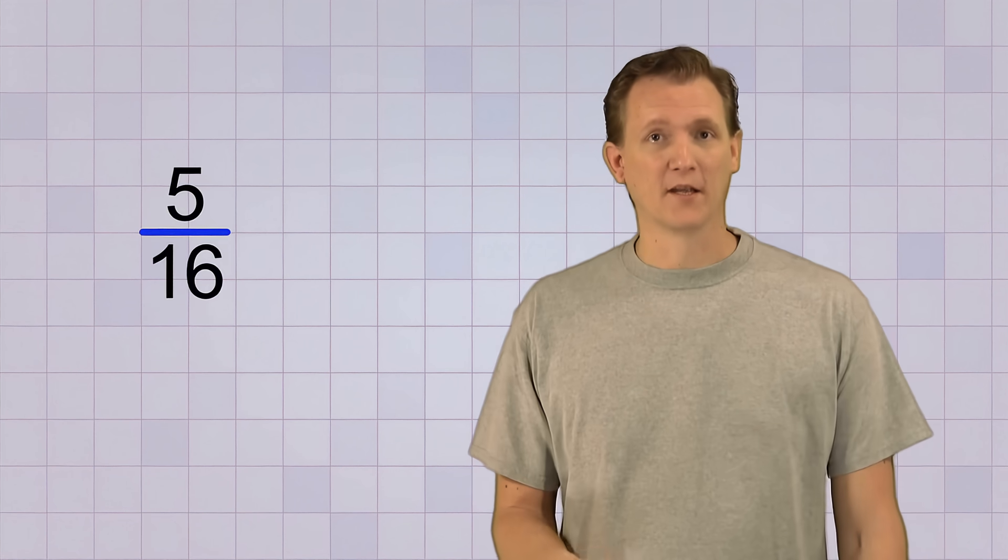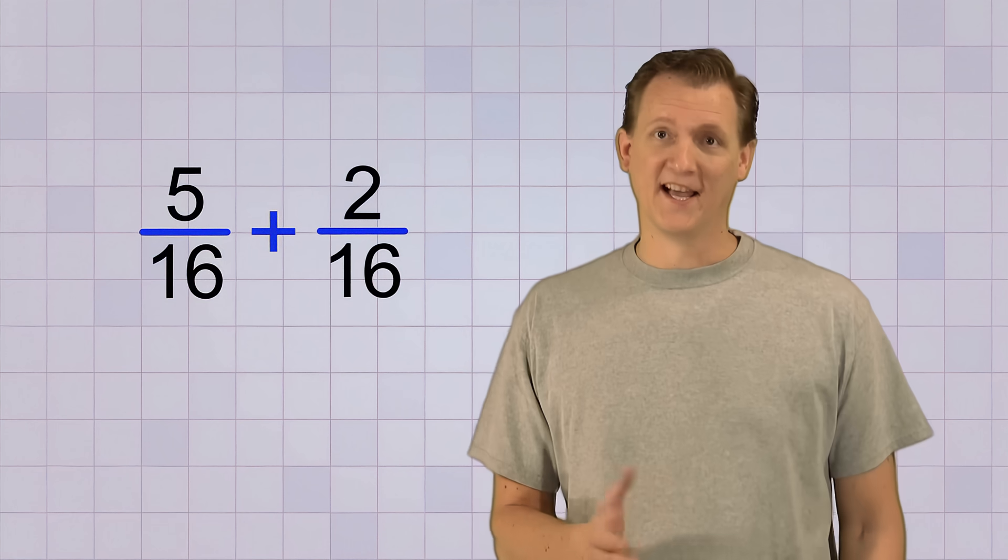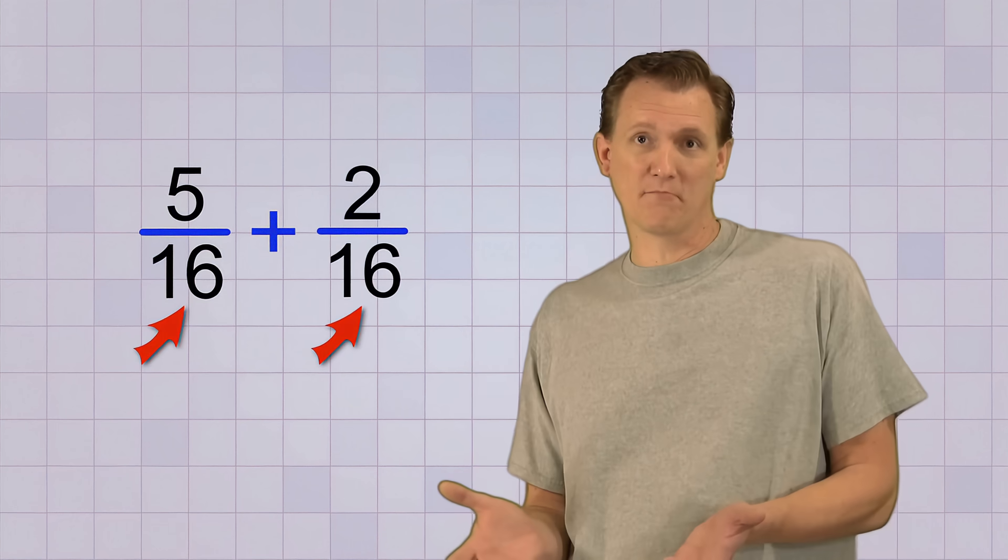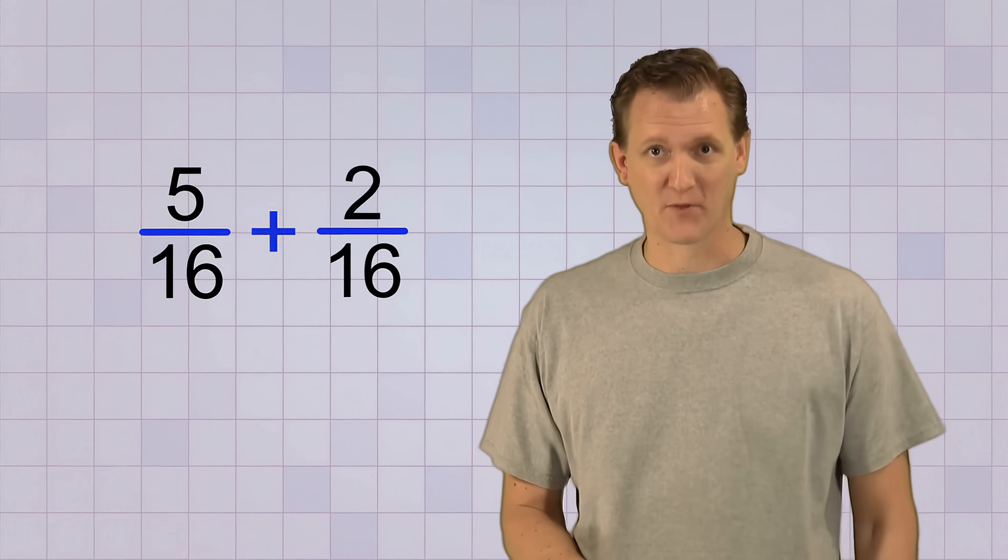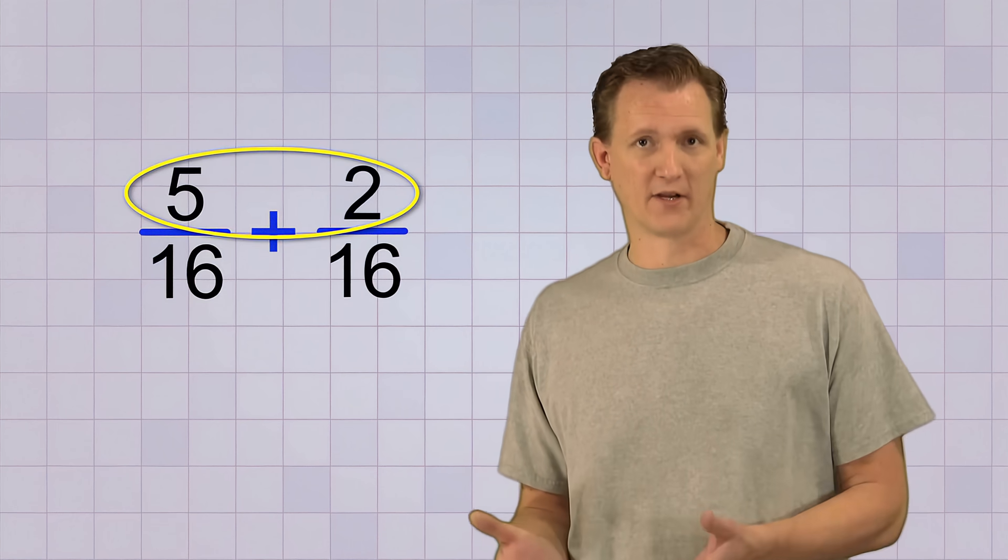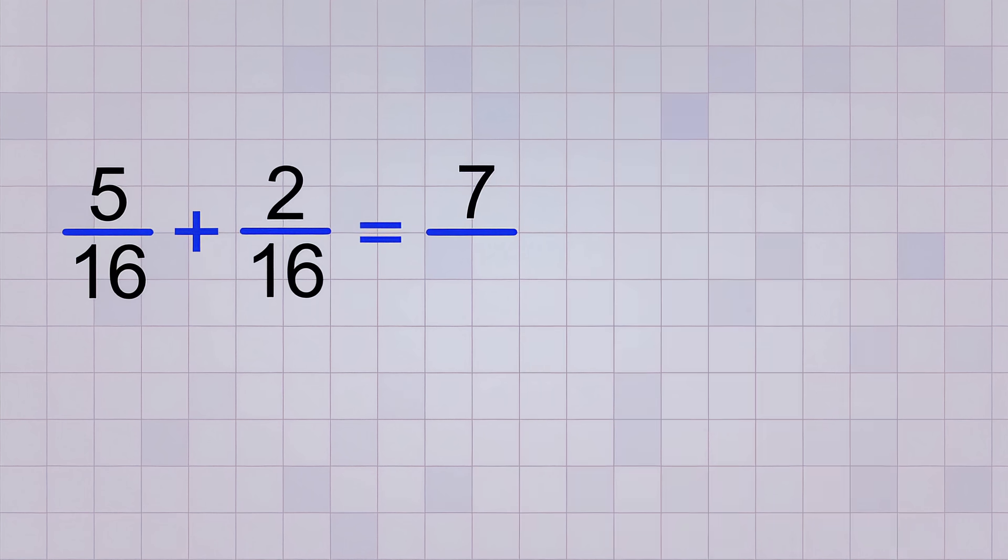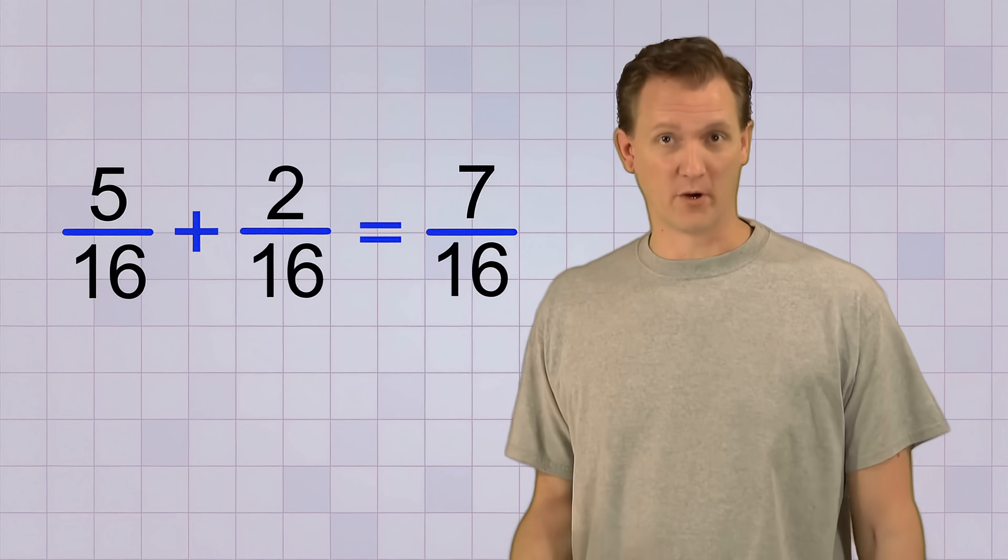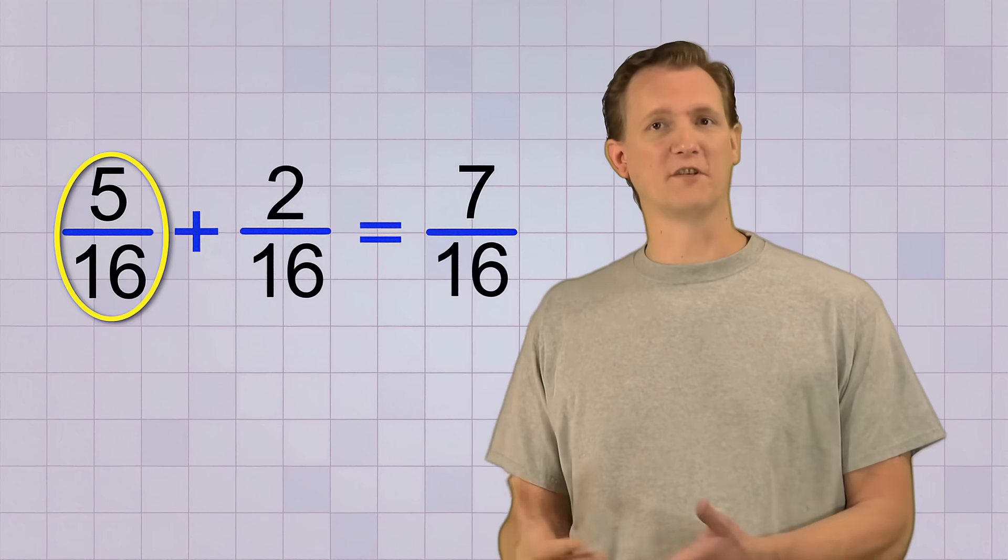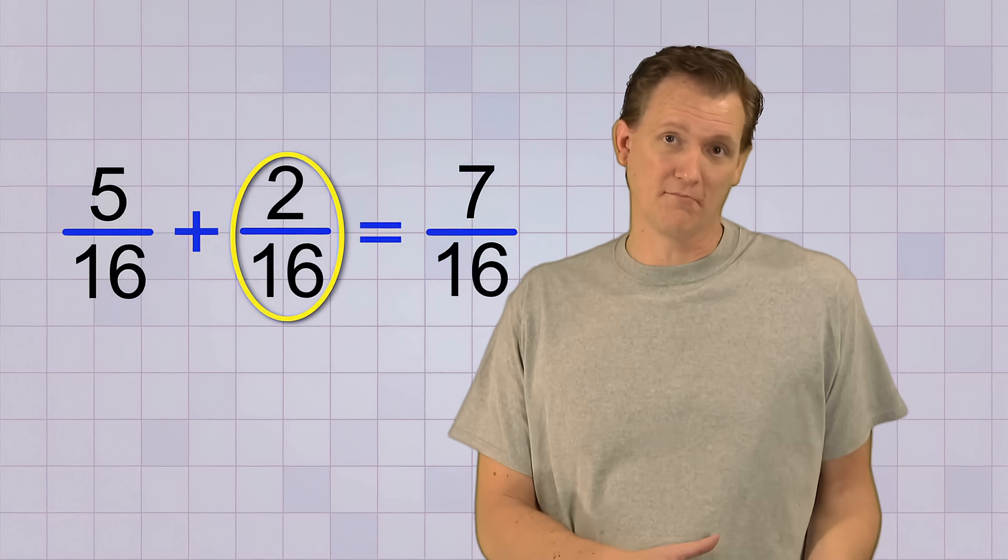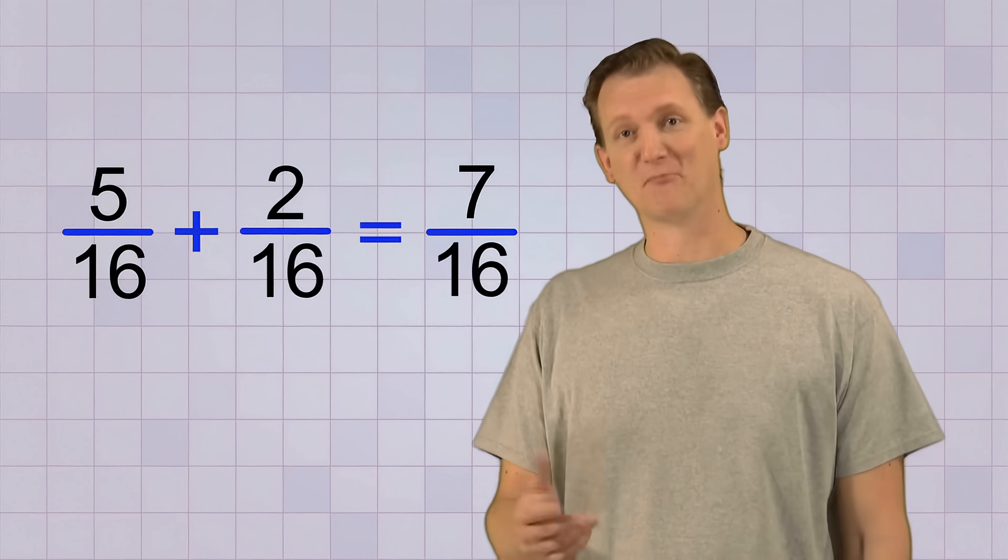Let's see a few more examples. Like this one. 5 over 16 plus 2 over 16. Again, since the bottom numbers are the same, it's easy to add these fractions. All we do is add the top numbers together. 5 plus 2 equals 7, and that's the top number of our answer. Then we just keep 16 as the bottom number of our answer. So, 5 over 16 plus 2 over 16 equals 7 over 16. Pretty easy, huh?